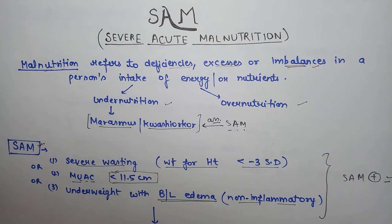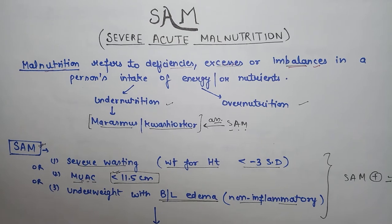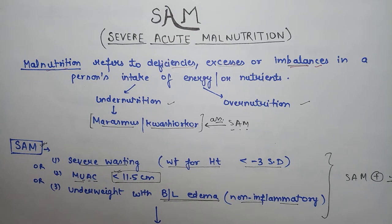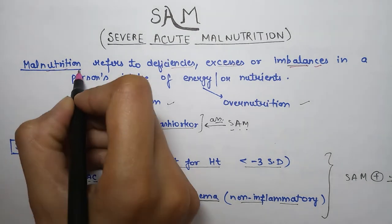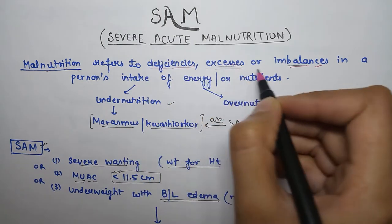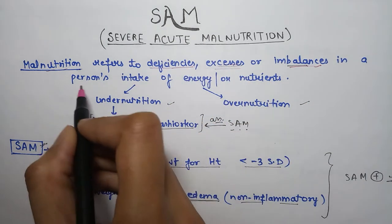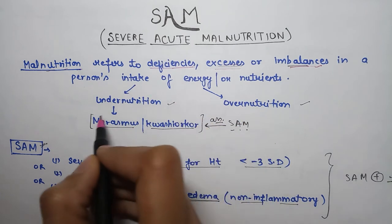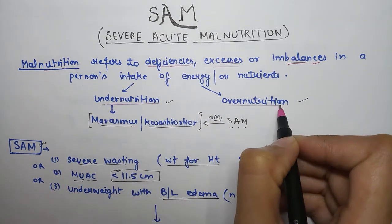Hello everyone, today we are going to talk about severe acute malnutrition, that is SAM. First, what is malnutrition? Malnutrition refers to deficiency, excess, and imbalance in a person's intake of energy. This can be undernutrition or overnutrition.